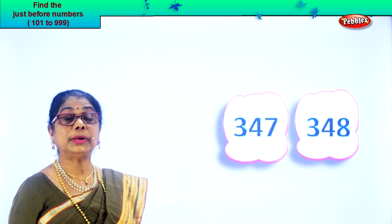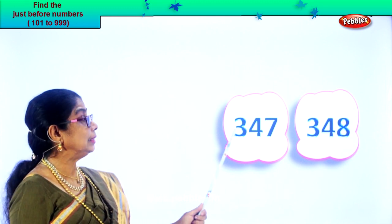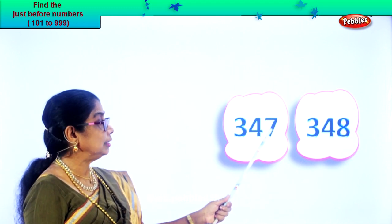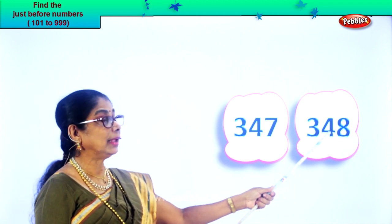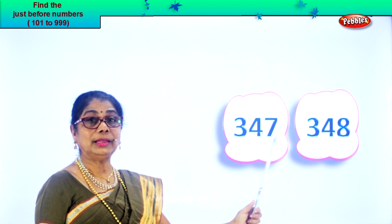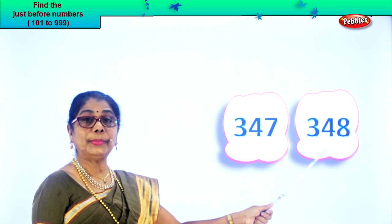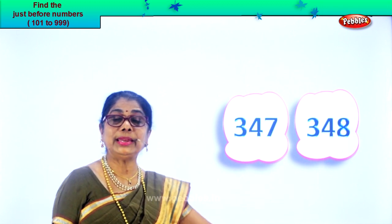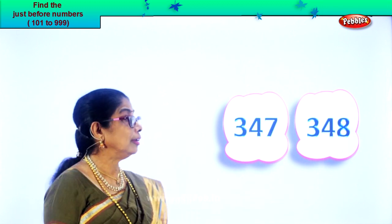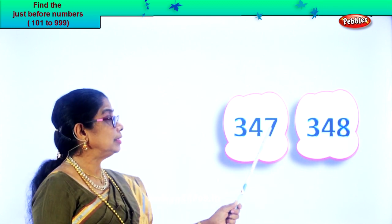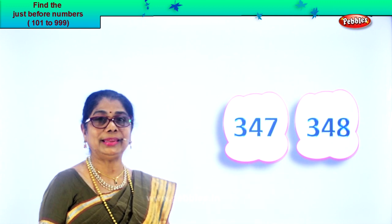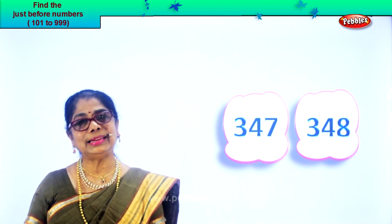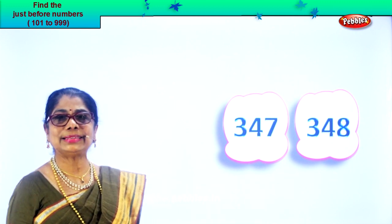After you find the number, you must say 347, 348. So this number comes before — when you read it, you should get it. 47, 48. Let's take another exercise.